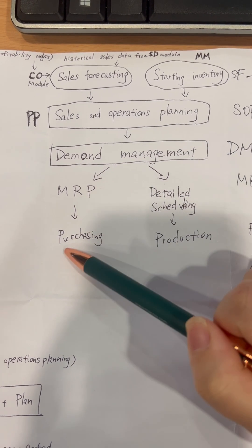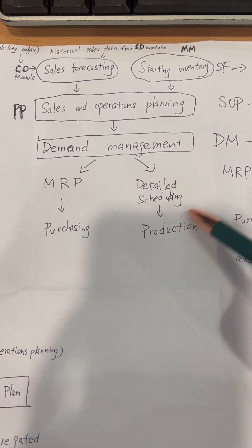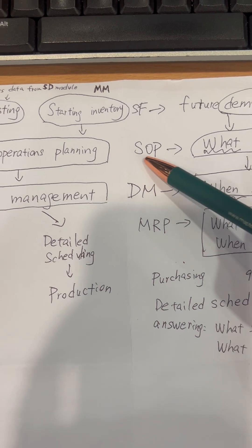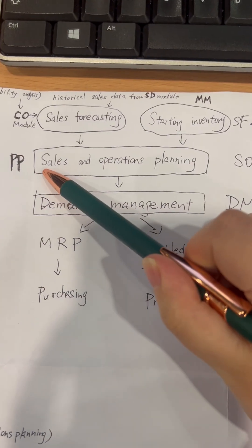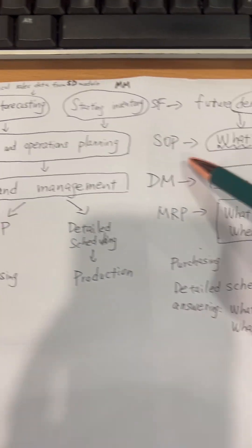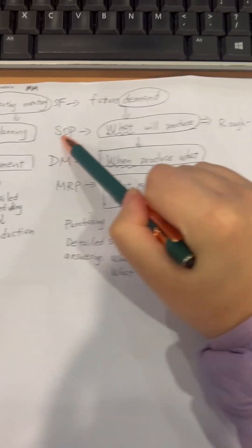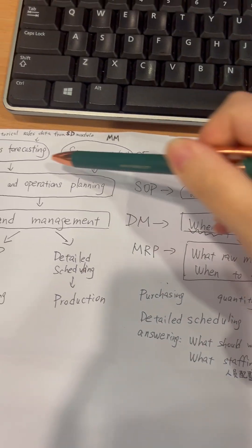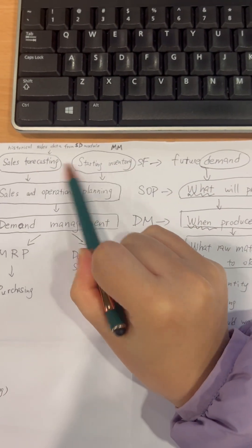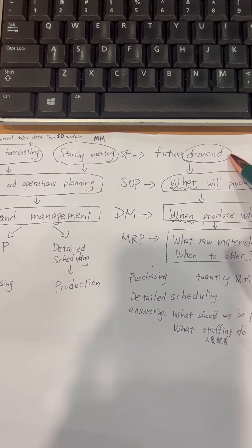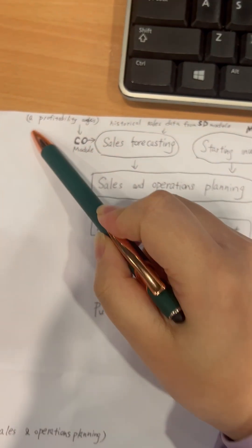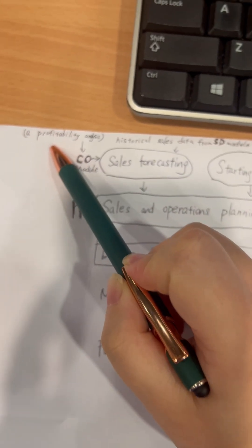Next in the framework we have MRP, purchasing, detail scheduling, and production. SOP stands for Sales and Operations Planning. In this framework, the first layer is all about demand, and from the control module we can find a report about it.